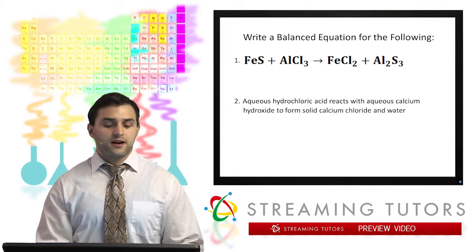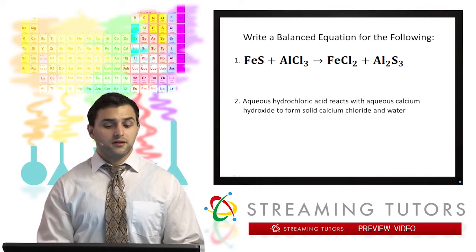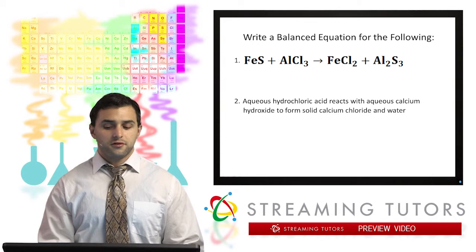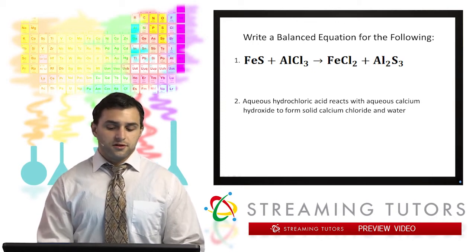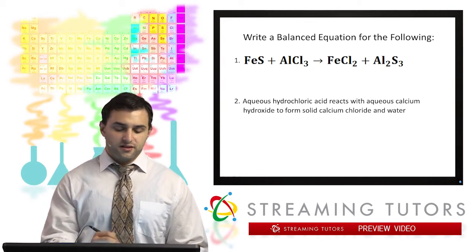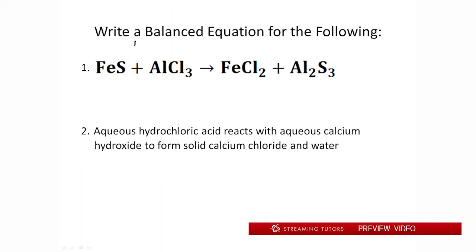So the first one, FeS plus AlCl3 goes to FeCl2 plus Al2S3. So let's see what needs to be balanced. On this side we have one iron, we have one sulfur, one aluminum, and three chlorine. On the right side we have one iron, three sulfur, two aluminum, and two chlorine. So clearly we have a lot to do here.